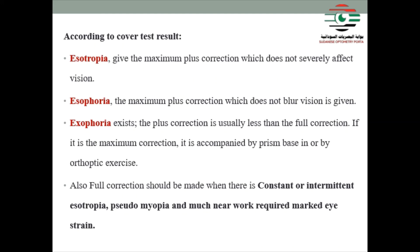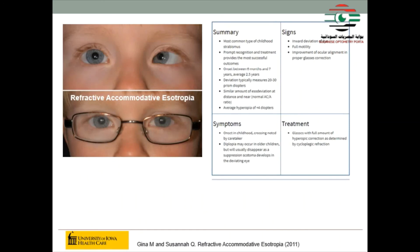Full correction should also be made when there is constant or intermittent esotropia, pseudomyopia, or significant near work required with marked asthenopia. In refractive accommodative esotropia — as shown in this case from Iowa Health Care University — before wearing glasses the eye is convergent, but after wearing full plus correction, the eye becomes aligned. This means glasses with the full amount of hypermetropic correction as determined by cycloplegic refraction is a good option.